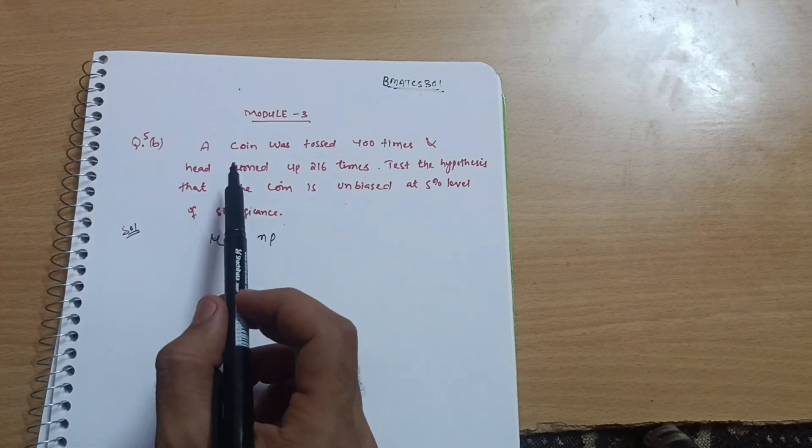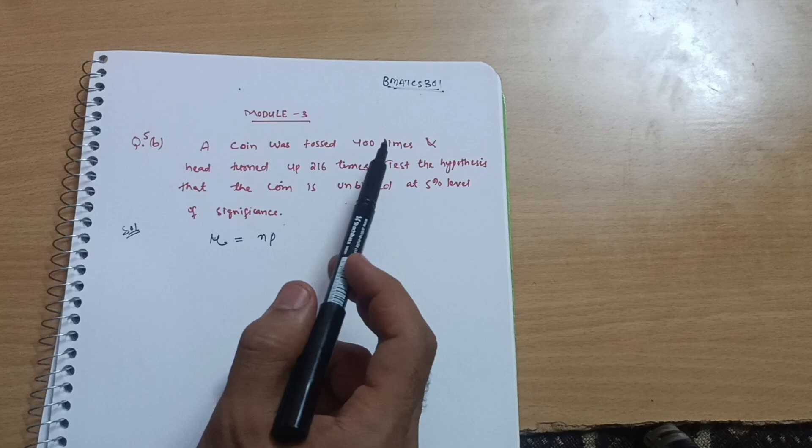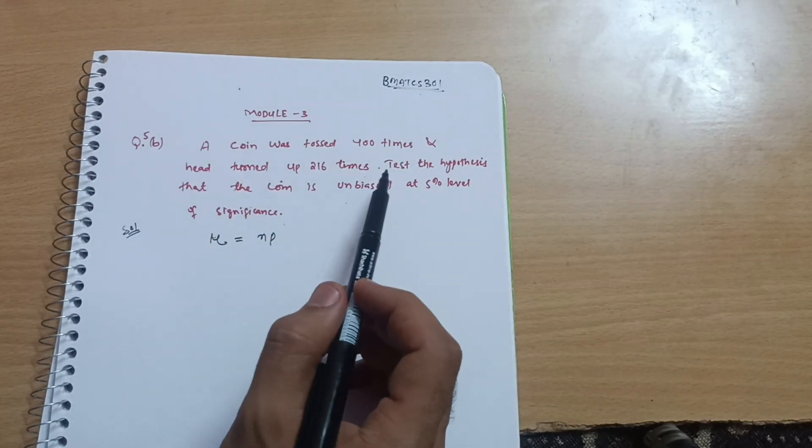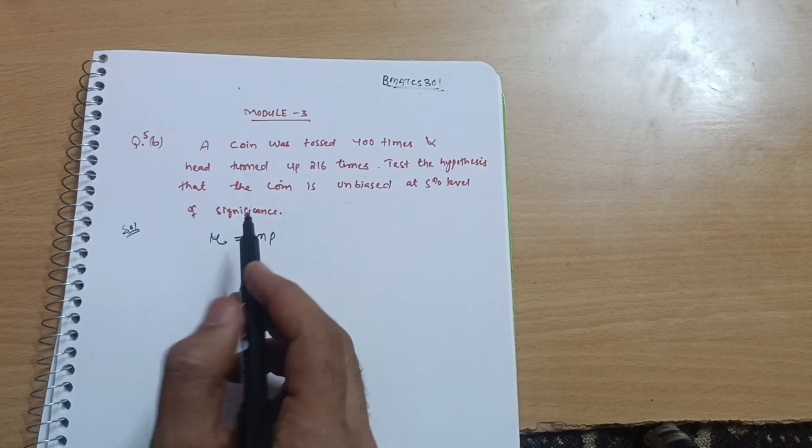Today I will discuss the question from the model. A coin was tossed 400 times and head turned up 216 times. Test the hypothesis that the coin is unbiased at 5% level of significance.